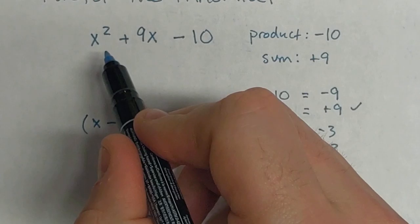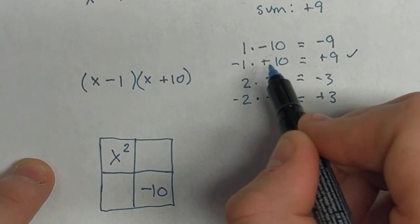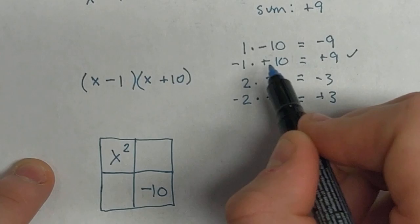I'm going to put the first one in my first box, the last one in my bottom corner. And then these two numbers that I split, so negative 1 and positive 10, I would put in with my x's. And it doesn't matter which you put where, it'll all work out at the end.